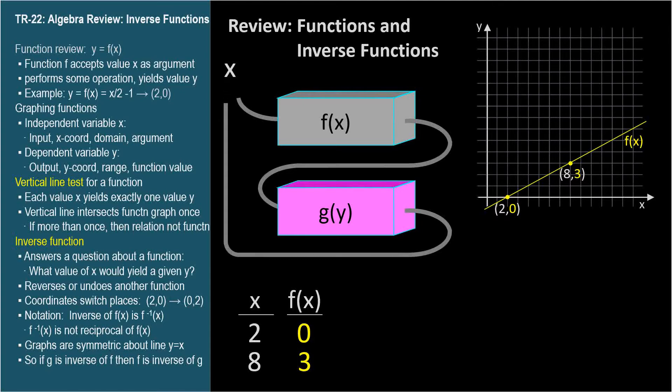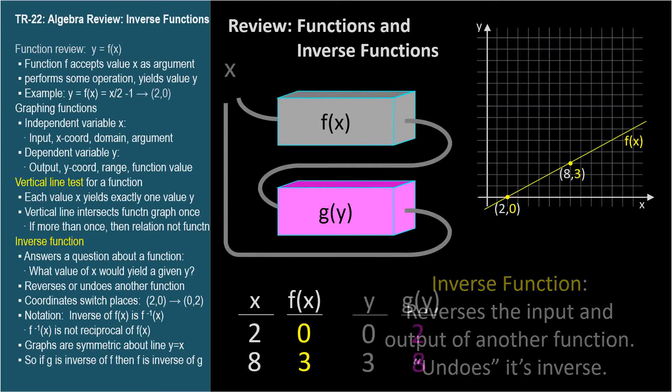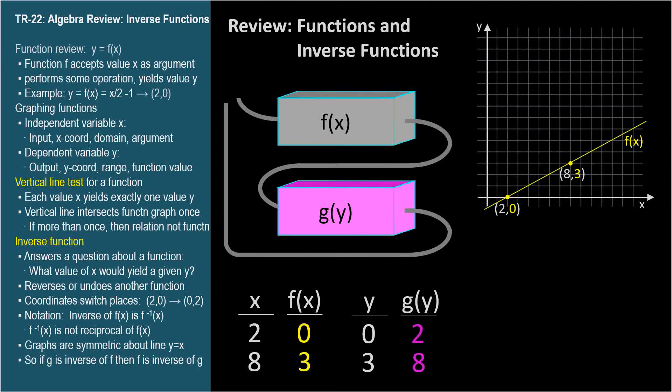An inverse function reverses the input and output of another function. You can also consider that an inverse function undoes the operation of the other function. The ordered pairs of inverse functions are reversed from each other, so the two sample points we chose for the first function are reversed for its inverse.